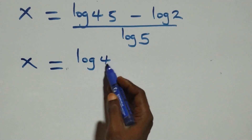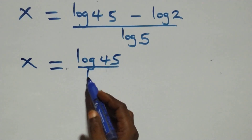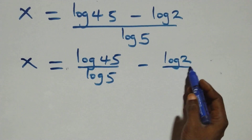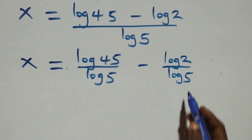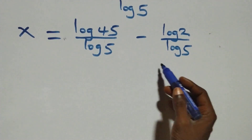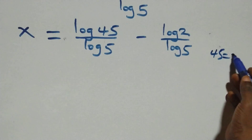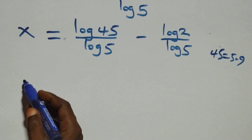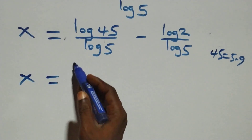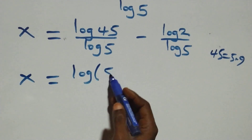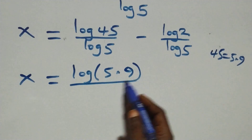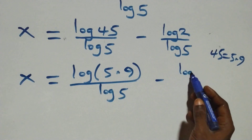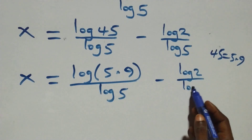From here, we can express 45 as 5 times 9. Which implies all we have becomes x equals to log of 5 times 9, over log 5, minus log 2 over log 5.